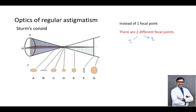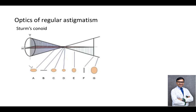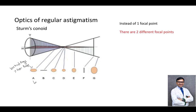We would now understand Sturm's conoid and how the rays converge. At point A, the vertical rays are more converging as compared to the horizontal rays. You can see here the horizontal rays are shown in the brown portion and the grayish portion represents the vertical rays. So at point A, vertical rays are more converging than the horizontal rays, and the point formed is a horizontal oval.